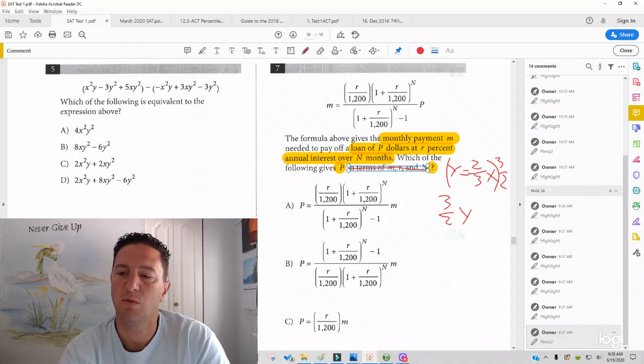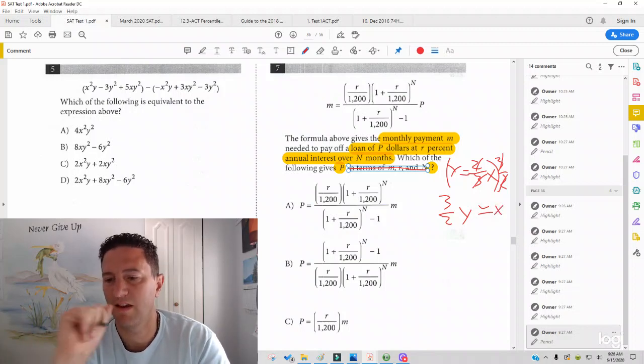but really what you should do whenever you're multiplying is cross cancel. The 3's cancel, the 2's cancel, and you just get X. So 3 halves Y equals X. And I've put X on the left, which is how you're used to seeing it. X equals 3 halves Y. Now,